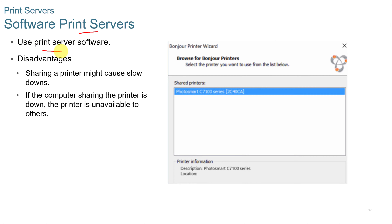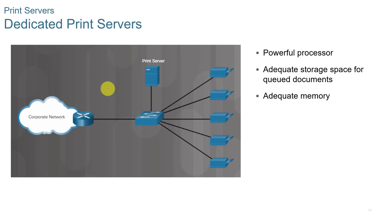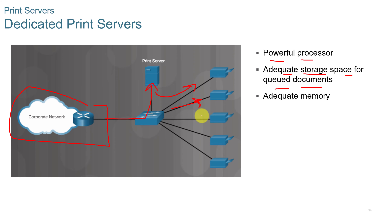Software print servers are set up on networks. You can use print server software, but the disadvantages are that sharing a printer might cause slowdowns or slow the network down, and if the computer sharing the printer is down, the printer is unavailable to others. You can also have hardware print servers where other devices on the network can connect to it. For dedicated print servers, such as on a corporate network, they have powerful processors and adequate storage space for queued documents — documents come in, get queued up, and are sent to the appropriate printer when available.